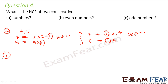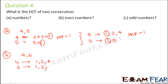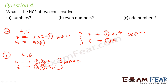Let us talk about 2 consecutive even numbers. For example, if one number is 4 the other is 6. Even numbers are divisible by 2. The factors of 4 are 1, 2, and 4. The factors of 6 are 1, 2, 3, and 6. The common factors are 1 and 2, so the highest common factor is definitely 2.